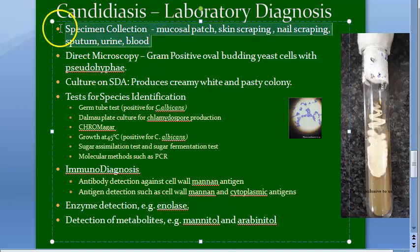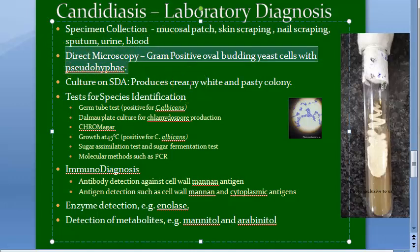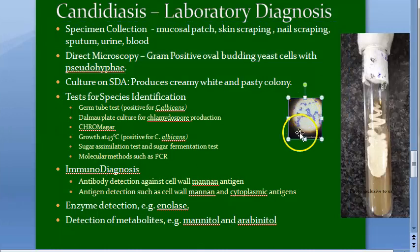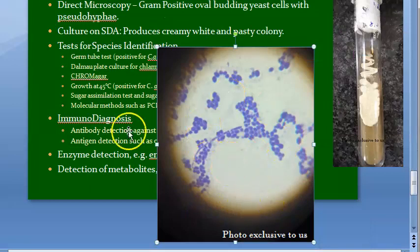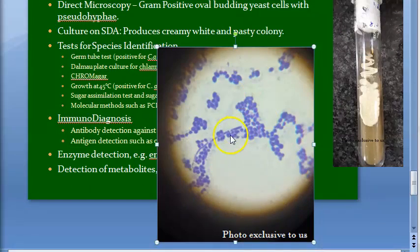In direct microscopy, gram staining reveals gram-positive oval budding yeast cells with pseudohyphae. It looks almost like staphylococci, but staphylococci will not have this kind of continuity — the chain-like appearance you see here is the pseudohyphae.